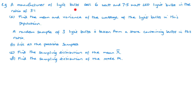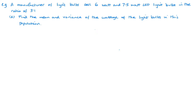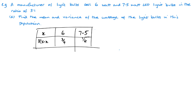In the second example, a manufacturer of light bulbs sells 6-watt and 7.5-watt LED light bulbs in the ratio of 3 to 1. We need to find the mean and variance of the wattage of the light bulbs in this population. Using X for wattage, the ratio 3:1 gives probabilities of three-quarters and one-quarter. The mean — the expected value — is 6 × (3/4) + 7.5 × (1/4).